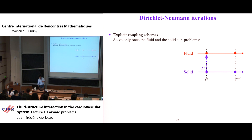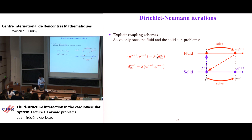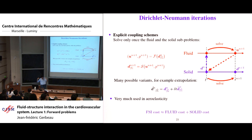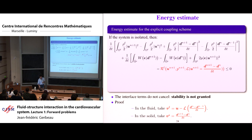Explicit coupling schemes — solving the fluid once and the solid once per time step — are very cheap: the cost equals that of solving the fluid and solid separately. This works well in civil engineering (wind on bridges) and aeroelasticity (airplane), but unfortunately not for blood flow. When you try to understand why, you go back to the energy equations and see that the staggered scheme introduces a spurious term because the fluid and solid are not solved at the same time step. This term has no definite sign and may disturb stability. The question was: what is the difference in the physics?